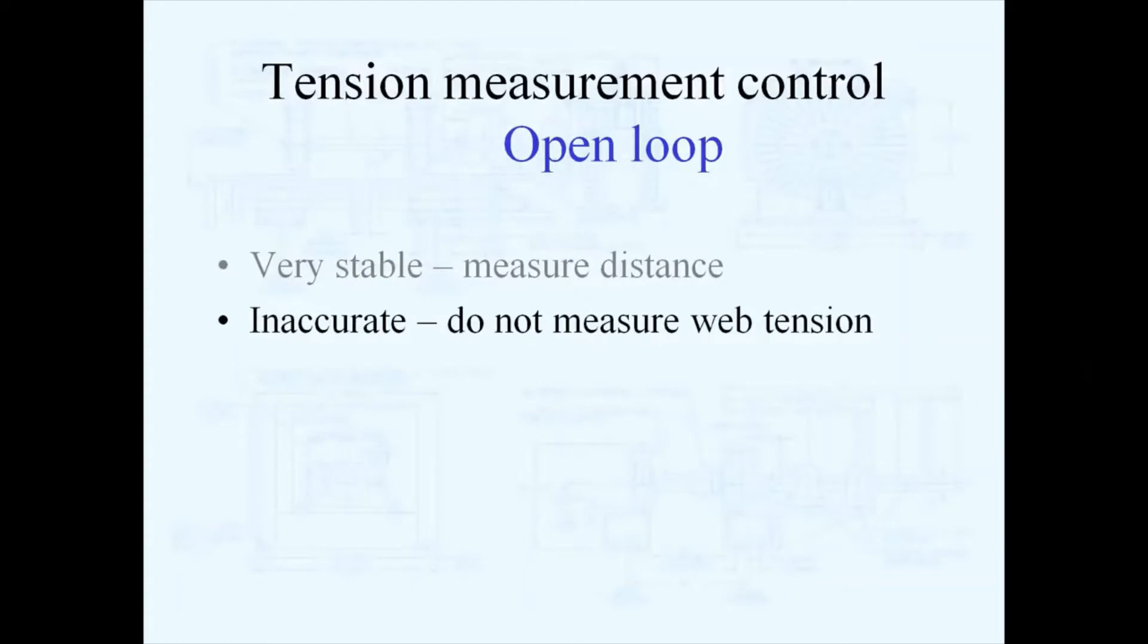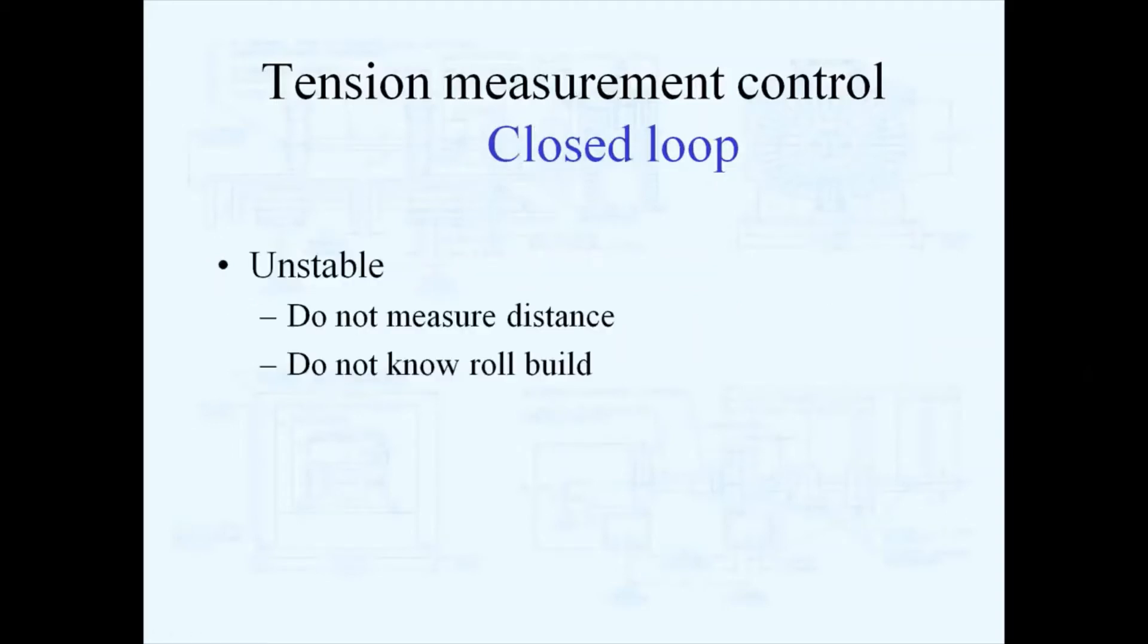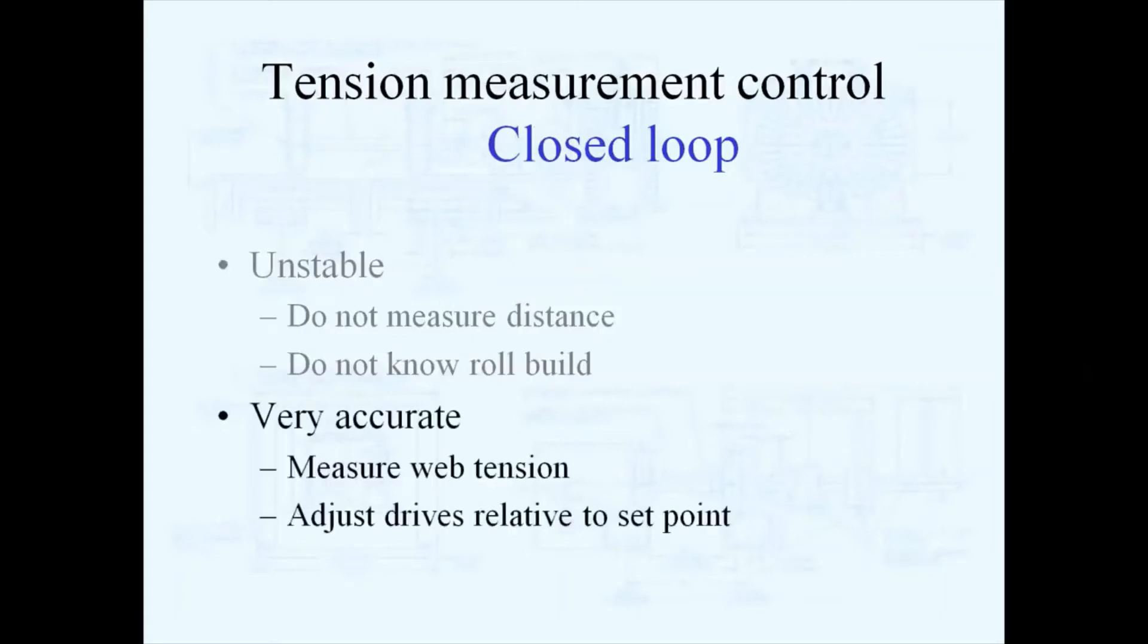Closed loop systems can be unstable because they don't know distance and they don't know the build ratio. Open loop systems are very accurate because they measure tension in the web and they adjust drives to always be at a constant set point.